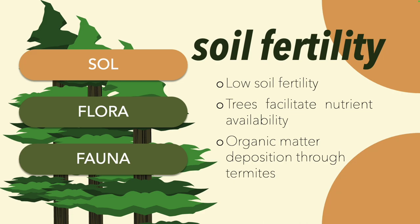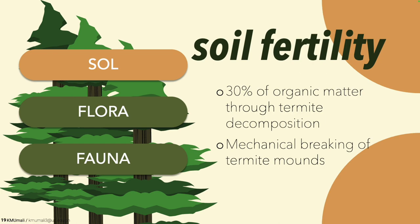Soil fertility is generally low in the savannahs as water has periods of scarcity. It was documented in Belize that trees are able to facilitate nutrient uptake from deeper horizons. Organic matter is also deposited in the soil where it is decomposed and eventually releases nutrients. Surprisingly, about 30% of the total organic matter is decomposed by termites. Nutrients are therefore stored in termite mounds, which led to a practice in Thailand where they mechanically break up termite mounds and spread them on the soil surface to increase fertility. Another documented phenomenon in Kenya is where termite mounds above ground serve as flood-proof areas where shrubs and trees grow, with a span of grassland in between, called the termite savannah.